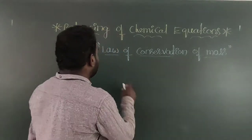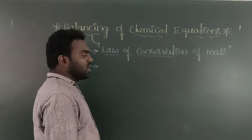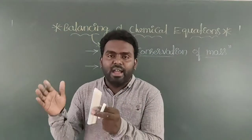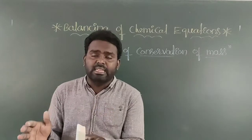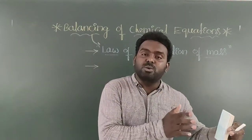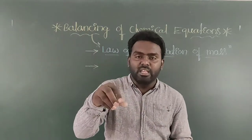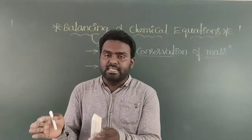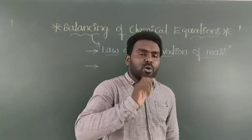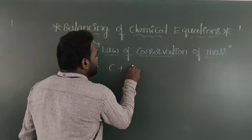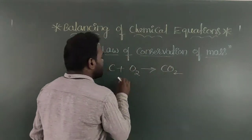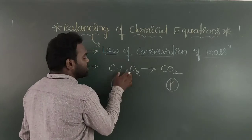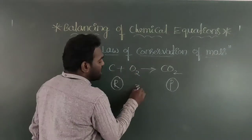The law of conservation of mass means: we cannot create energy and we cannot destroy energy, but that energy is used in different forms — like water, petrol, and coal. The second important point of balancing a chemical equation: the number of atoms present in the reactant side must compulsorily equal the number of atoms present in the product side. For example, C plus O2 gives CO2. In the reactant side: 1 carbon atom and 2 oxygen atoms — total 3 atoms. In the product side: 1 carbon and 2 oxygen — also 3 atoms.